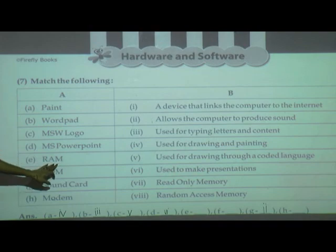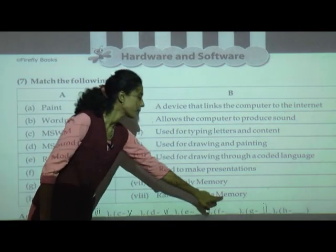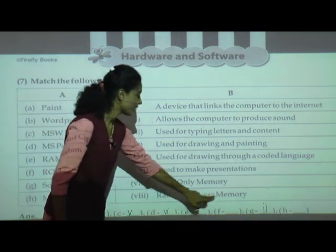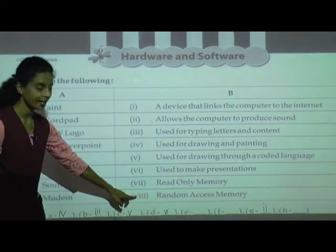RAM — what is the long form of RAM? Random access memory. The number here is eight.